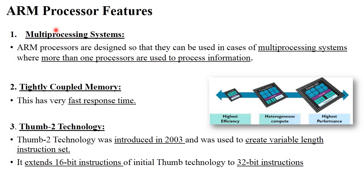The next point is ARM processor features. These ARM processors have different features, which is why they are mainly used in electronic devices. The first feature is multi-processing system — ARM processor supports multi-processing systems, meaning more than one processor is used to process information so you can perform more than one task at the same time. The next feature is tightly coupled memory. Because ARM processor supports RISC architecture, it fetches all data from memory and performs all operations in registers, giving it a very fast response time where each task is performed within a second.